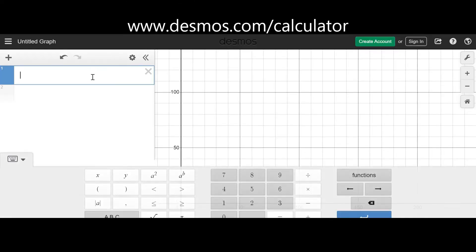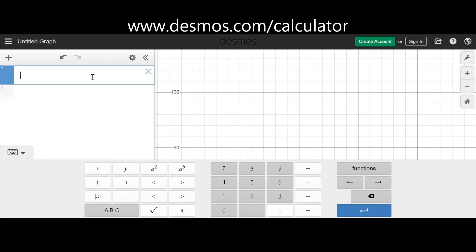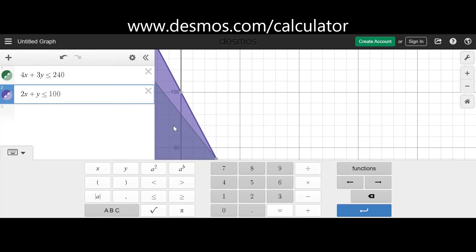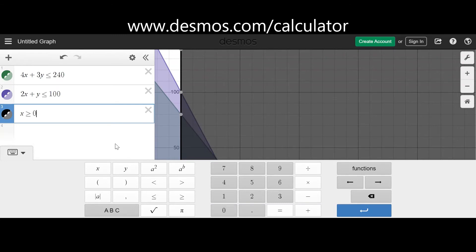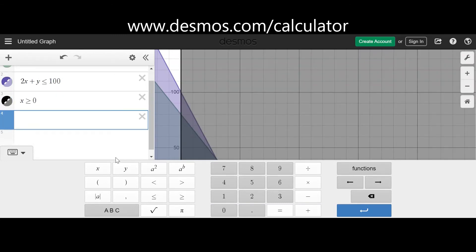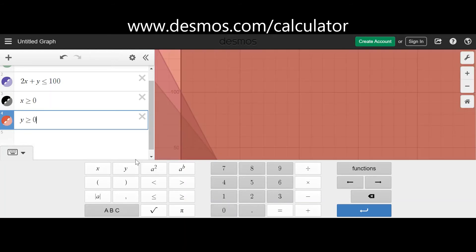On Desmos.com what we need to do is type all the equations that we formed. The first one was 4x + 3y is less than or equal to 240. Then we had 2x + y is less than 100 hours available for painting. And then we had the non-negativity constraints: x is greater than or equal to 0 and y is greater than or equal to 0.